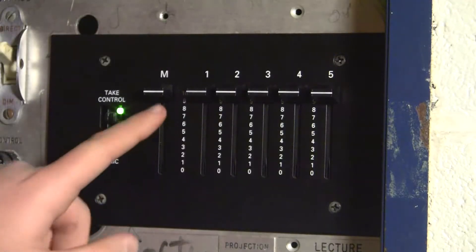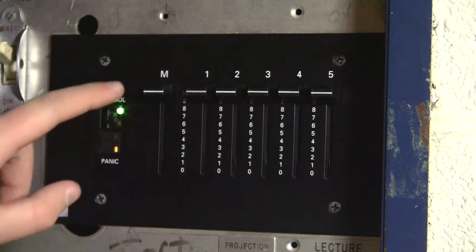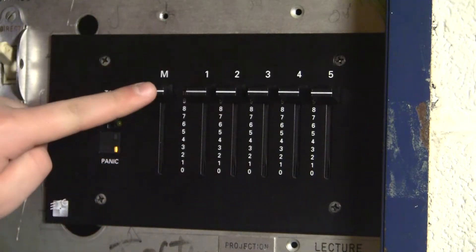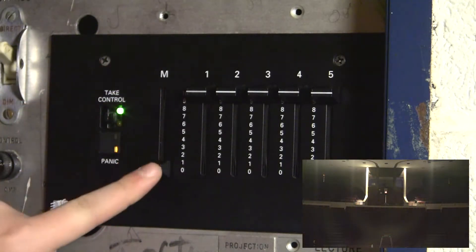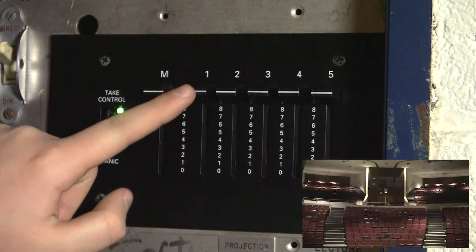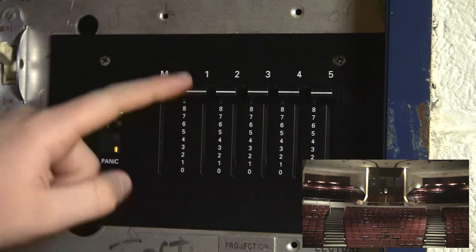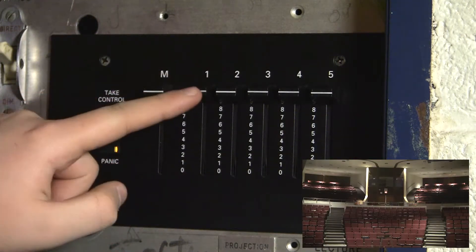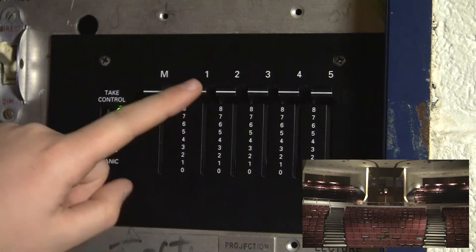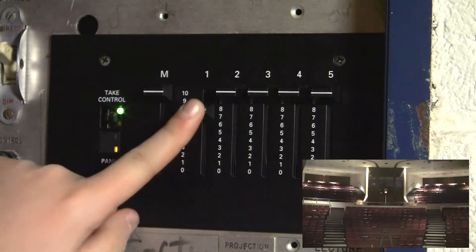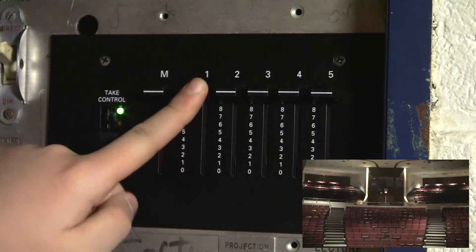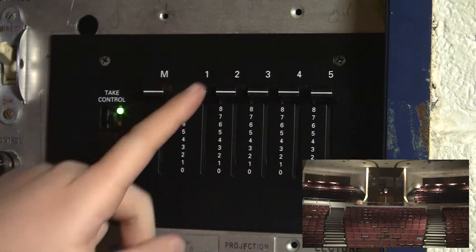The first slider is your master slider. This controls all the house lights at one time. Your second slider with the number one above it is the main house light slider, which controls the house lights in the main section of the auditorium.